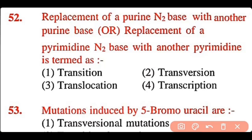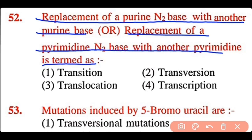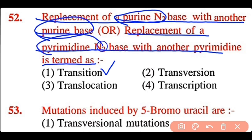Question 52: Replacement of a purine nitrogenous base with another purine base, or replacement of a pyrimidine nitrogenous base with another pyrimidine base is termed: transition, transversion, translocation, or transcription. The correct answer is option 1. Transition is the replacement of a purine with another purine, or a pyrimidine with another pyrimidine.